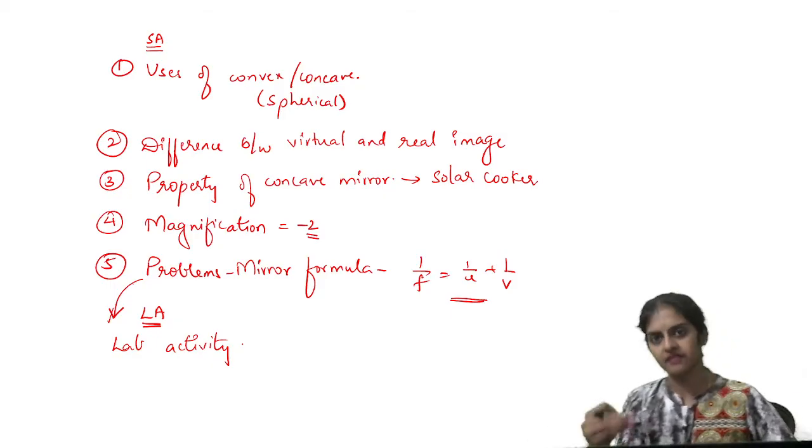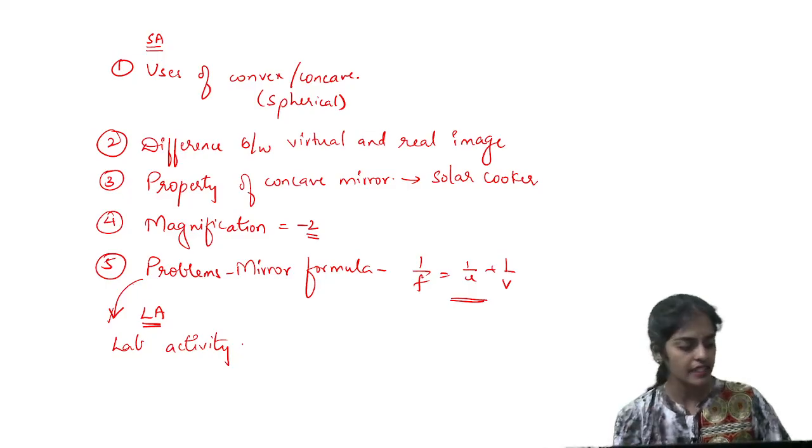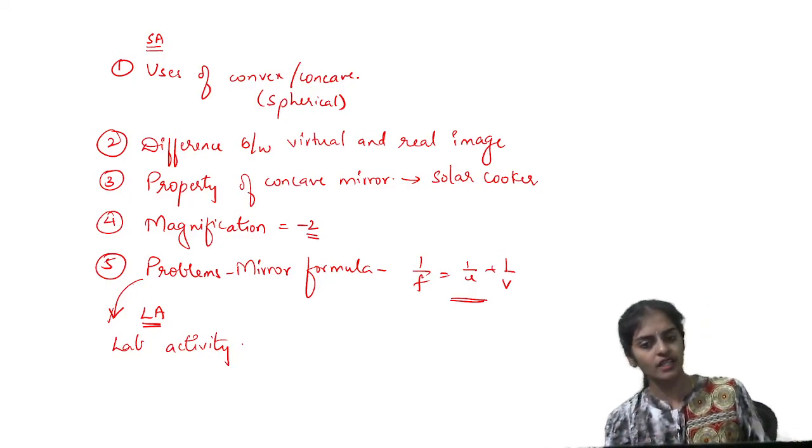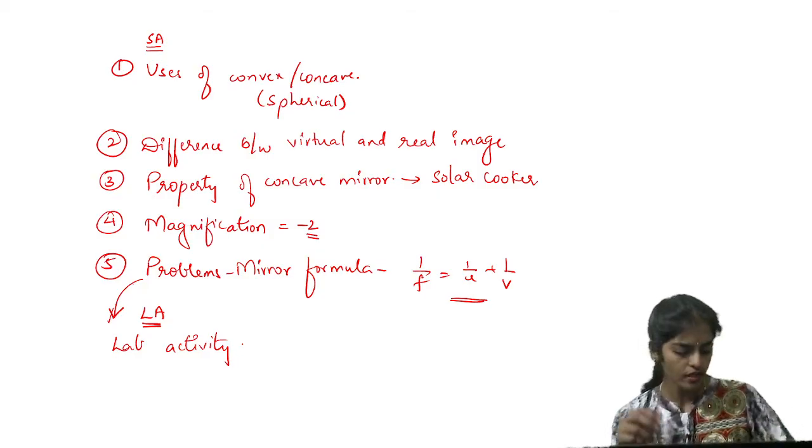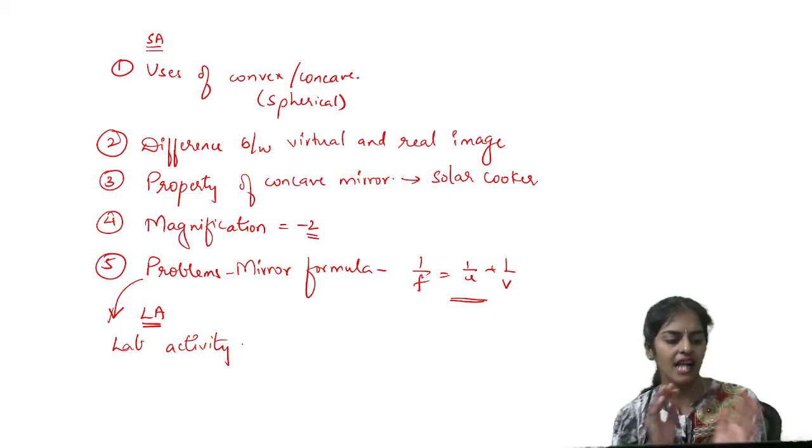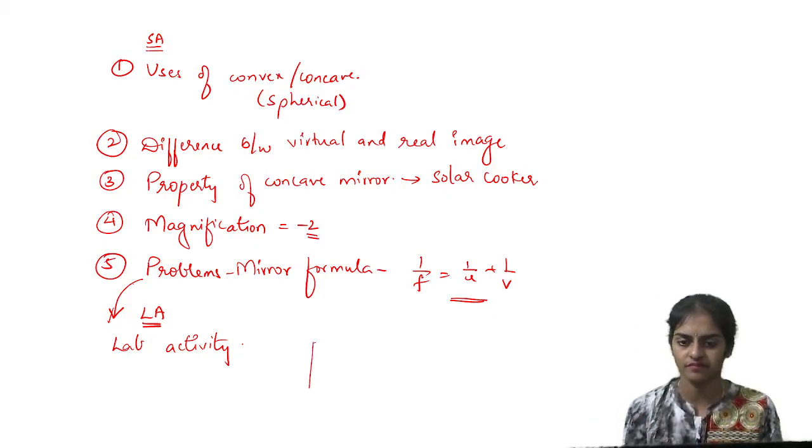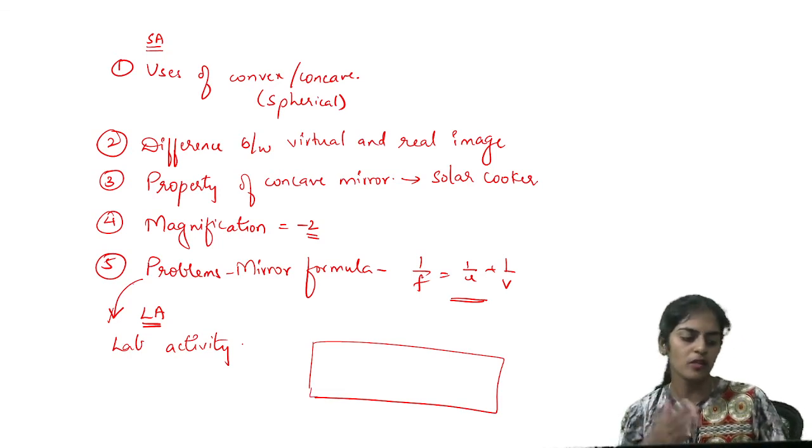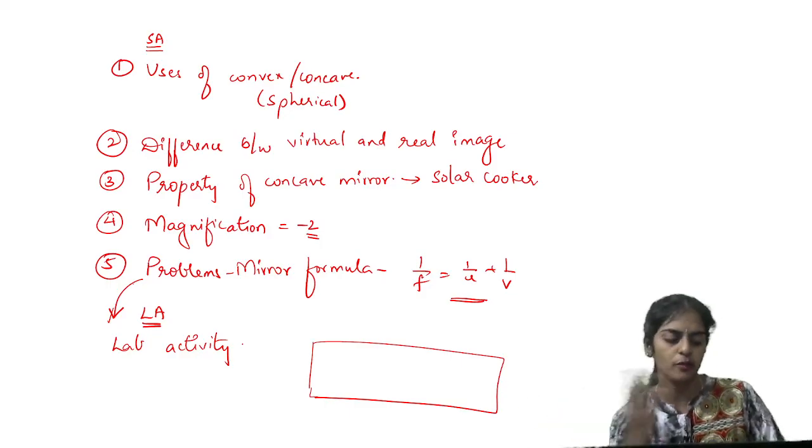Long answer is lab activity. 5 short and 1 long. Clear, everyone? And in this case, I have a suggestion. If you have a position name, page number 16, what we have learnt in this situation, you should tell the table. Position of the object, like position of the image, the nature of the image.